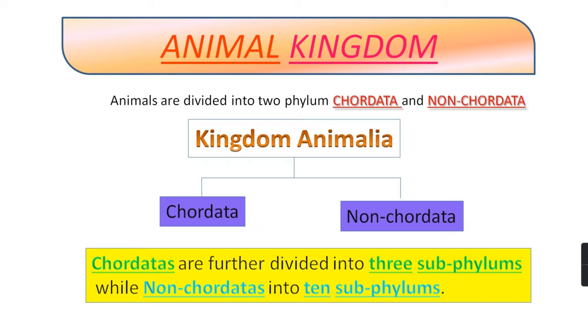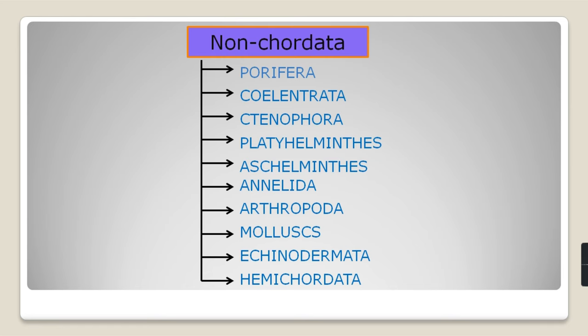Let's start with Phylum Non-Chordata. Phylum Non-Chordata is divided into ten sub-phylums: Porifera, Cylentrata, Tenophora, Platyhelminthus, Ascalminthus, Anilida, Arthropoda, Molluscs, Echinodermata, and Hemichordata.